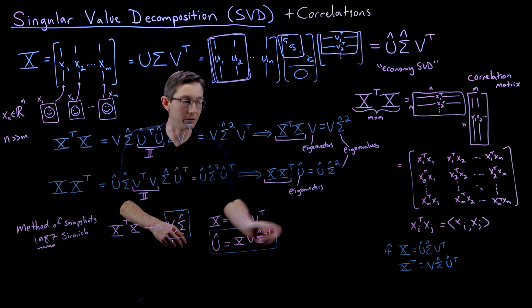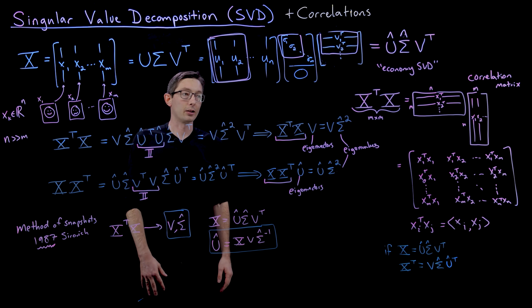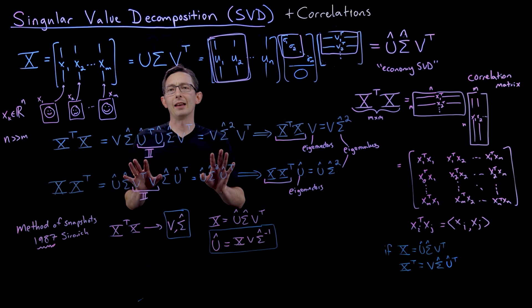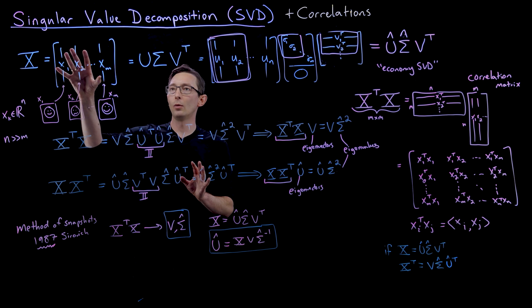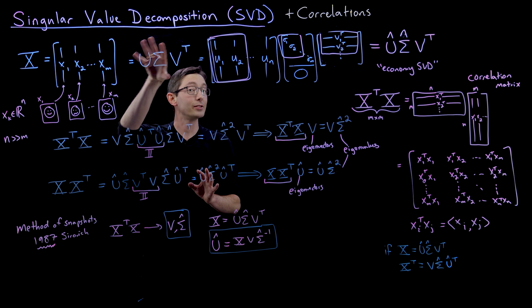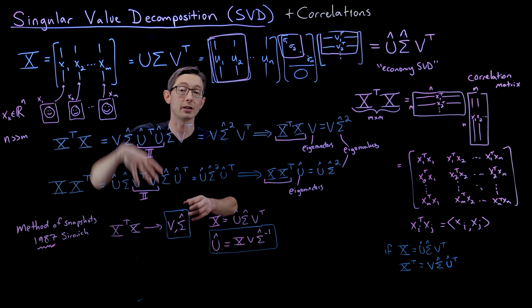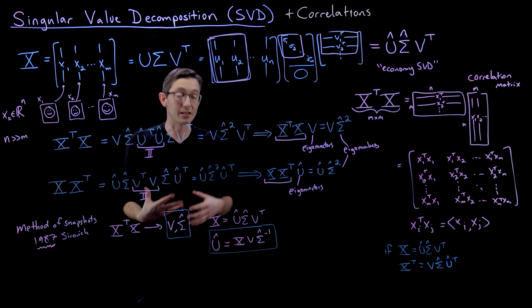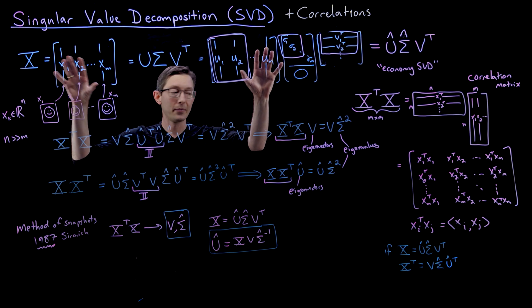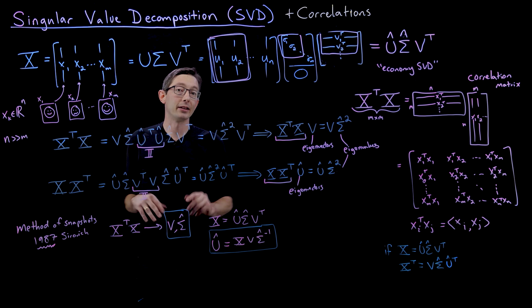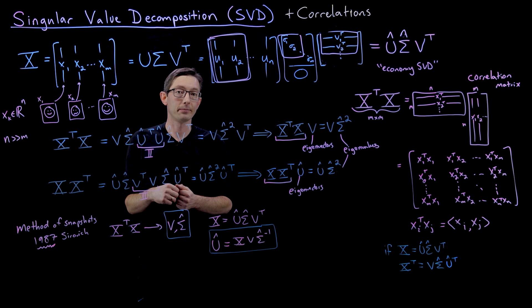Again, not recommended if you can get away with computing the SVD a different way, using for example the QR factorization or randomized techniques that we'll talk about later. But I wanted to show you this method of snapshots for completeness.